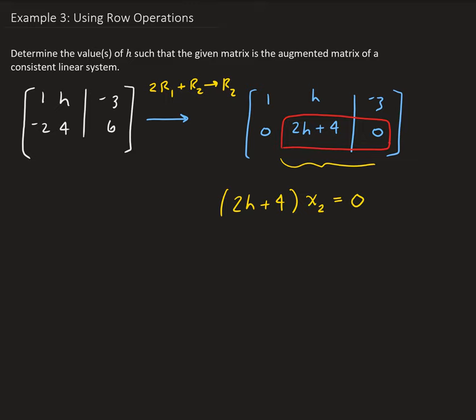So therefore H can be any value. Even if it was minus 2, if H was minus 2, we would get negative 4 plus 4, which is 0. We still get 0 times x₂ equals to 0, which is true.